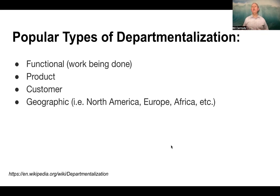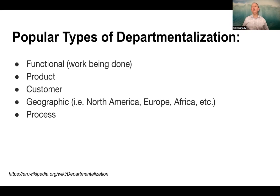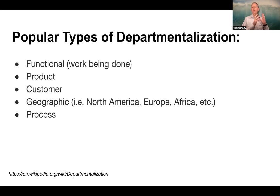Geographical — we might say I'm looking for territories, so I'll group my departments based on North America, Europe, Africa, et cetera. Or maybe it's process. There are specific processes, so I'm thinking these are my front-end processes and I'm going to have these groups work together, and these are my back-end processes so I'll have those groups work together.